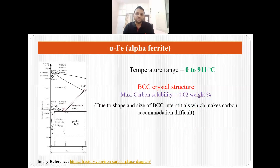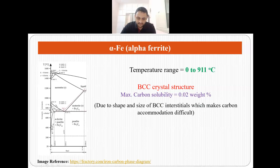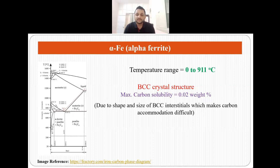Let us talk about the three types of iron that are formed. The first one is alpha ferrite, which occurs in the temperature range of 0 to 911 degrees centigrade. As you can see from here, this is the alpha ferrite region. Alpha ferrite has a BCC crystal structure, and since it has BCC crystal structure, the shape and size of the BCC interstitials are such that they do not allow carbon accommodation easily. That is why the maximum carbon solubility in alpha ferrite is only 0.02 weight percent.